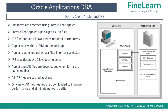Let's start with forms client applet and JRE. Whenever the user clicks on any form-based application in the E-Business Suite portal, the request goes to the middle tier — that is the application tier — and a simple applet called the forms client applet is launched in your browser. This applet is responsible for downloading all the JAR files (Java Archive files) from the application tier, and these JAR files contain all the classes required to run the forms.